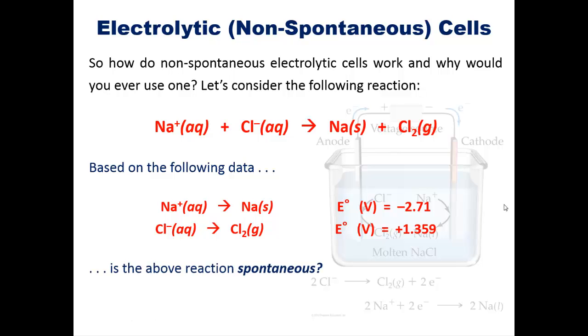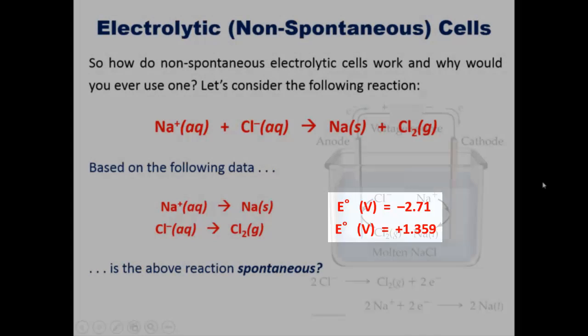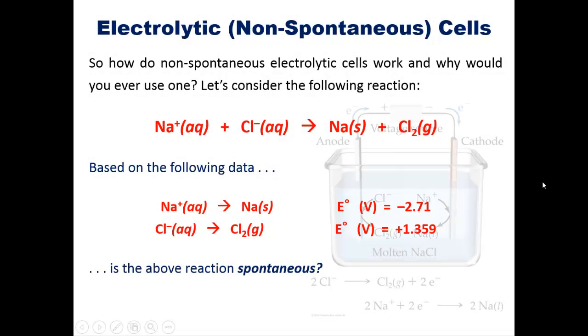We can see that to determine this, all you have to do is add these two values, negative 2.71 and positive 1.359. You'll notice that if you do that, you end up getting a negative overall value. Because it's a negative overall value, the answer is no. This process would not be spontaneous.